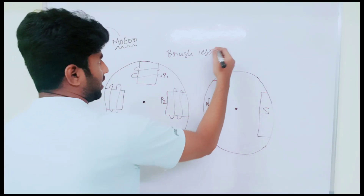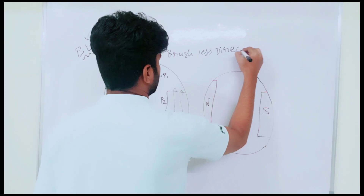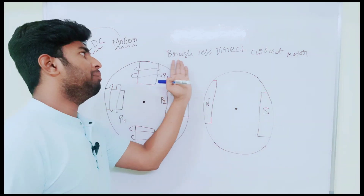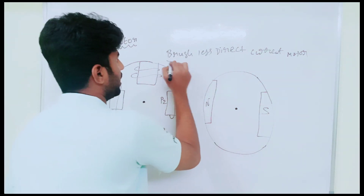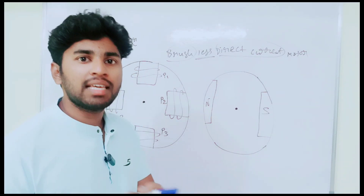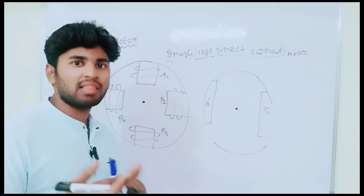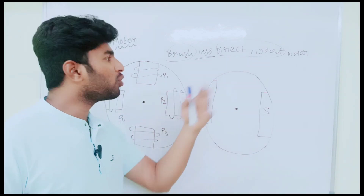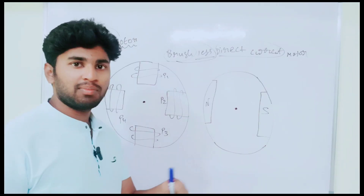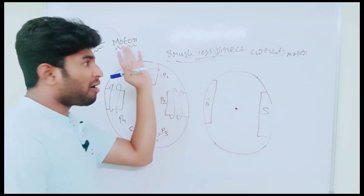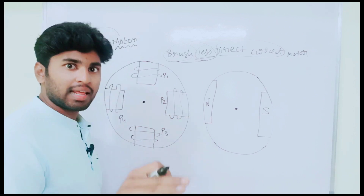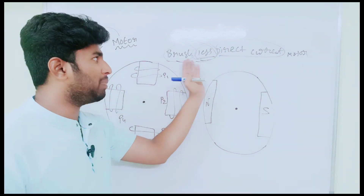DC is Direct Current. So the full abbreviation is Brushless DC Motor. It is called Brushless because if you bring the supply as direct current — like a battery — and if there is no brush in the motor, unlike a normal DC motor which has a brush, then it is called Brushless. So it means Brushless DC Motor.